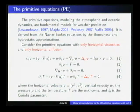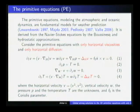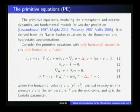The primitive equations, modeling the atmospheric and oceanic dynamics, are fundamental models for weather prediction. It is derived from the Navier-Stokes equations by the hydrostatic approximation and the Boussinesq scale approximations. In the context of atmosphere and ocean, the horizontal scale is much larger than the vertical scale - several thousand kilometers versus several kilometers. So the horizontal viscosities are stronger than the vertical viscosity. This motivates us to consider the following primitive equations, which only have horizontal viscosities and only horizontal diffusivity.